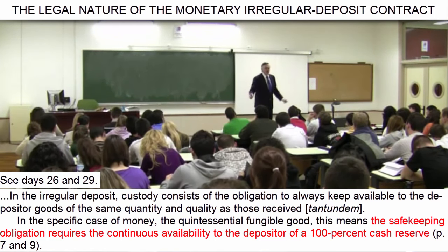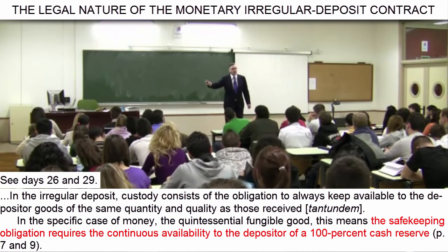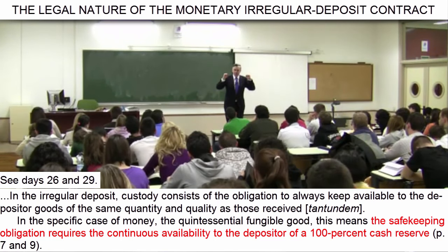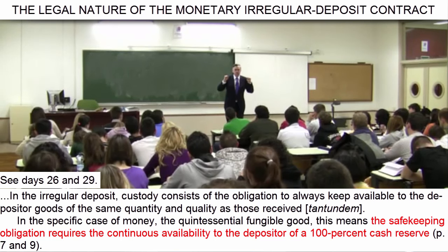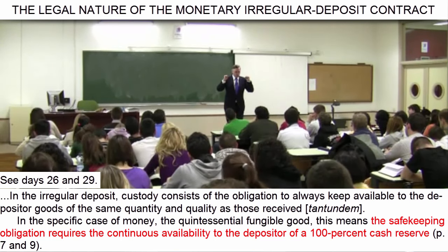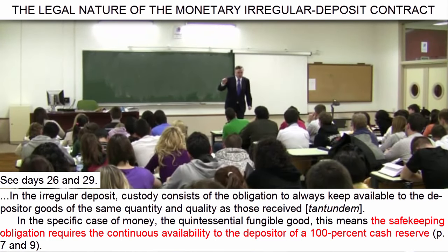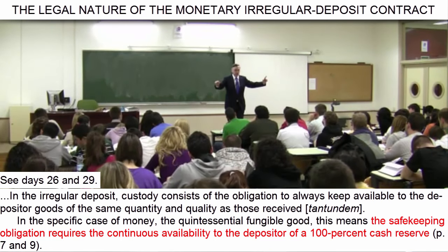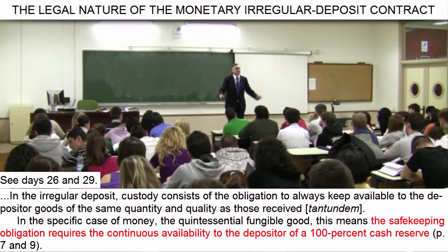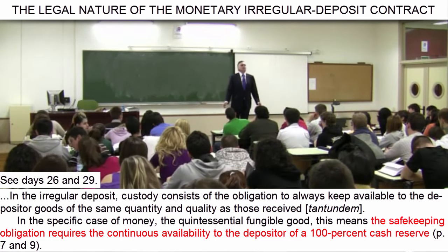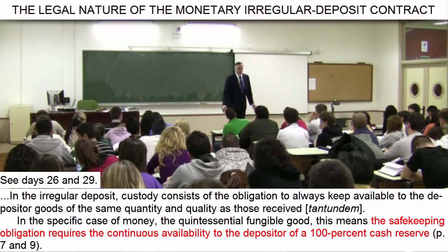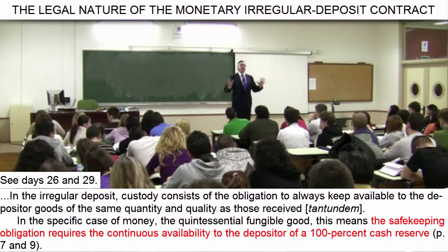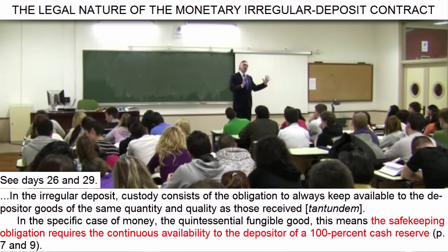If property rights were enforced in the case of these privileged economic agents, as they are enforced for everyone else, we would not be the victims of these recurring stages of credit expansion, bubble, malinvestment, financial crisis, and economic recession.